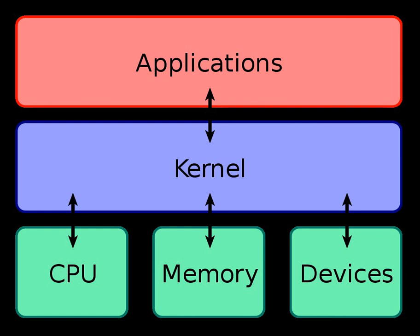Microkernel, also abbreviated μK or uK, is the term describing an approach to operating system design by which the functionality of the system is moved out of the traditional kernel into a set of servers that communicate through a minimal kernel, leaving as little as possible in system space and as much as possible in user space. A microkernel designed for a specific platform or device will only ever have what it needs to operate. The microkernel approach consists of defining a simple abstraction over the hardware, with a set of primitives or system calls to implement minimal OS services such as memory management, multitasking, and inter-process communication. Other services, including those normally provided by the kernel such as networking, are implemented in user space programs referred to as servers.